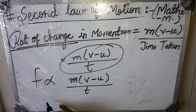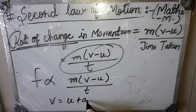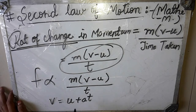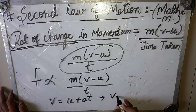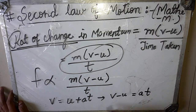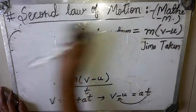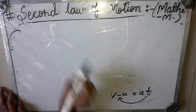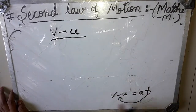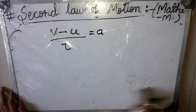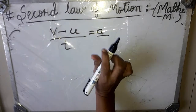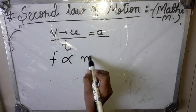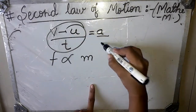We should know that the value of v comes from the kinematic equation of Chapter 1: v equals u plus at. Rearranging this, v minus u equals at. Taking t to the other side, (v minus u) upon t equals acceleration a. So, force is directly proportional to m into (v minus u)/t, which means force is directly proportional to m into a.